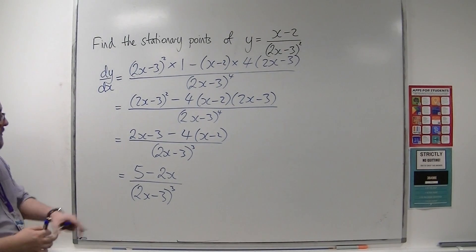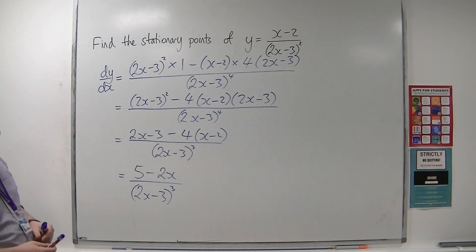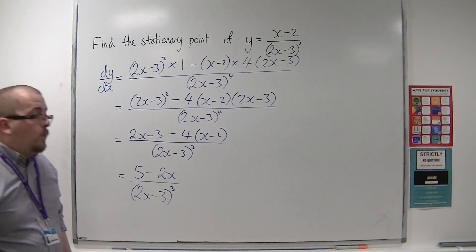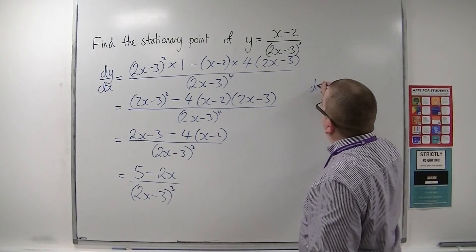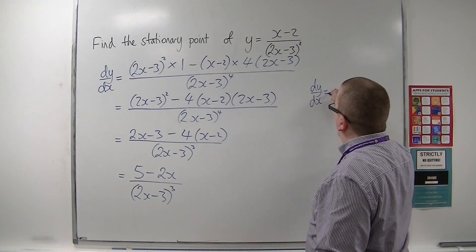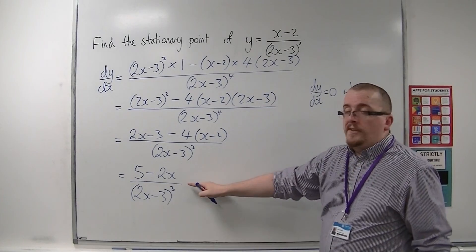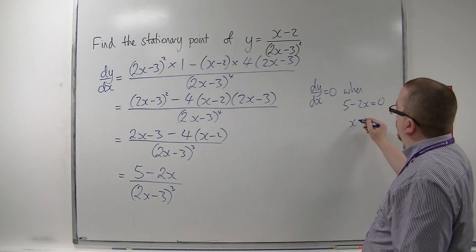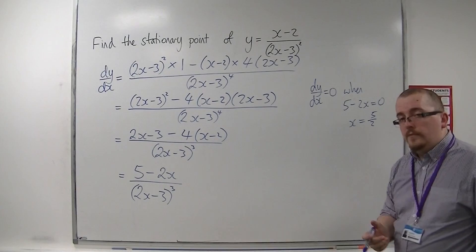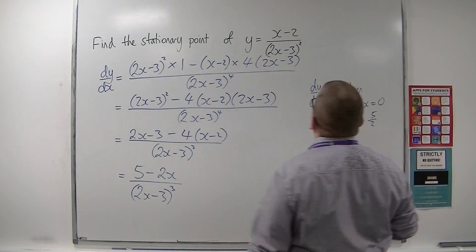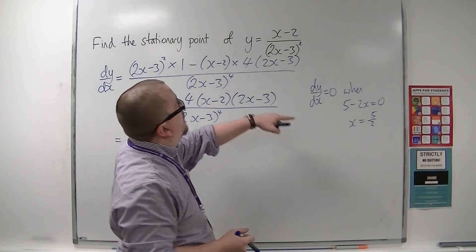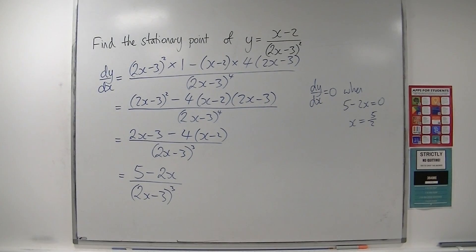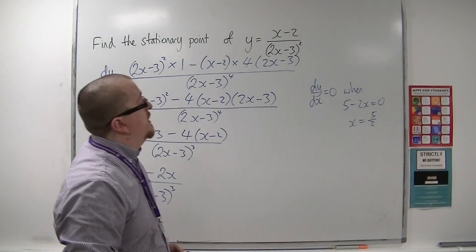So that is the derivative of the original function. Really this should say find the stationary point, because there is only going to be 1. dy by dx equals 0 when the numerator of the derivative is 0, so when 5 minus 2x equals 0, meaning x would have to be 5 halves. That is the x-coordinate of the stationary point. I would then need to plug that into my original curve in order to work out the y-coordinate.